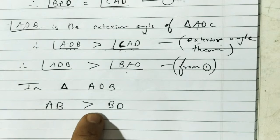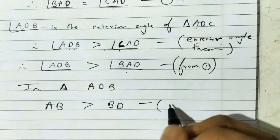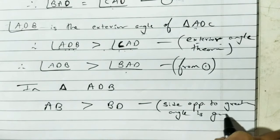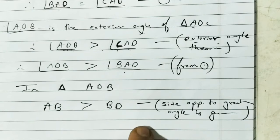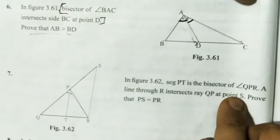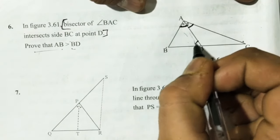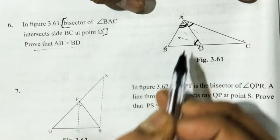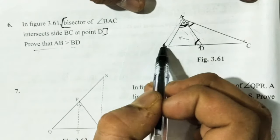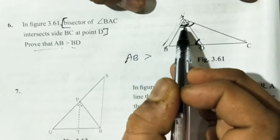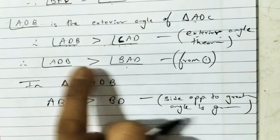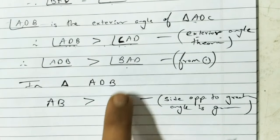Hence proved. The reason to write: side opposite to the greater angle is greater. Since angle ADB is greater than angle BAD, the opposite side AB is greater than opposite side BD — which is exactly what we had to prove. Hence proved.